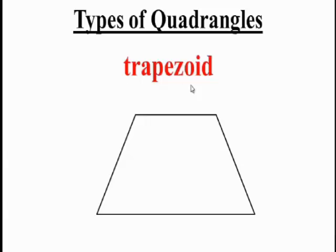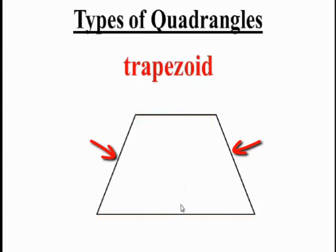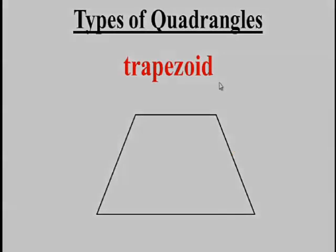This is a trapezoid. A trapezoid has two sides that are parallel. The top and the bottom sides are parallel to each other, but the other sides are not parallel.